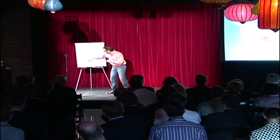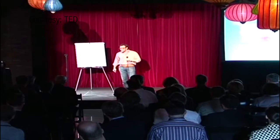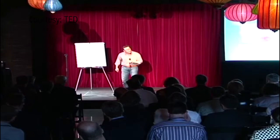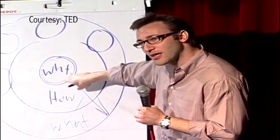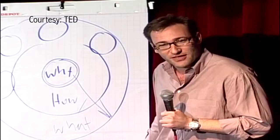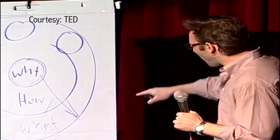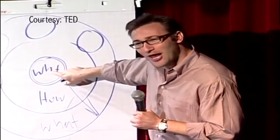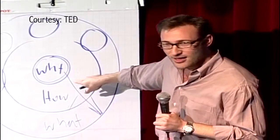You know, sometimes you can give somebody all the facts and figures, and they say, I know what all the facts and details say, but it just doesn't feel right. Why would we use that verb? It doesn't feel right? Because the part of the brain that controls decision-making doesn't control language. And the best we can muster up is, I don't know, it just doesn't feel right. Or sometimes you say you're leading with your heart or you're leading with your soul. Well, I hate to break it to you. Those aren't other body parts controlling your behavior. It's all happening here in your limbic brain, the part of the brain that controls decision-making and not language.